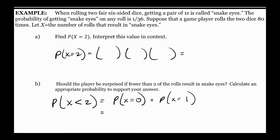When rolling two fair six-sided dice — fair die means a regular die, not loaded, probabilities are all the same, one-sixth for all the sides — getting a pair of ones is called snake eyes. The probability of getting snake eyes on any roll is one out of 36, because there are 36 different outcomes and a one and a one is one of them.